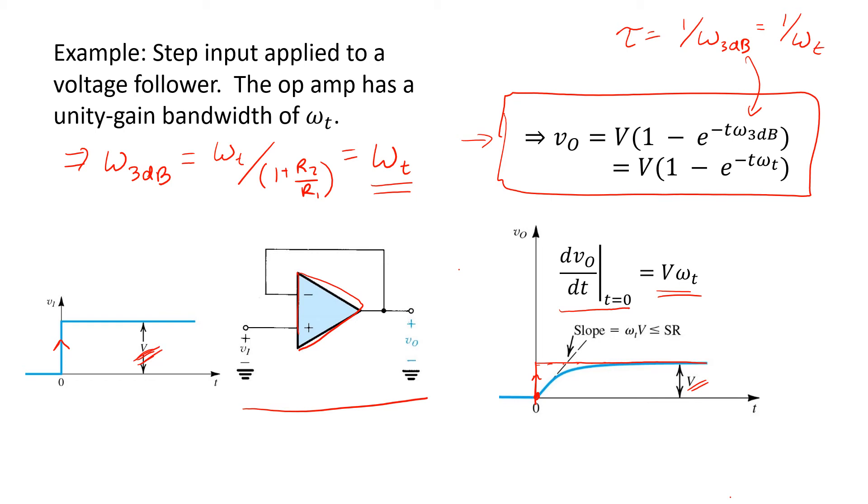If the step height V gets larger than some limit, what happens is that the slope that's being demanded of the op-amp at the output, at time t equals 0, is so high for large V that the op-amp simply can't keep up. There are finite currents flowing in the internal circuitry of the op-amp that simply limit how fast its output voltage can be changed. This limit is referred to as the maximum slew rate of the op-amp. So as long as the slope at time t equals 0 is less than the slew rate limit, then we get the exponential settling predicted by this first-order linear analysis.